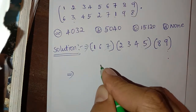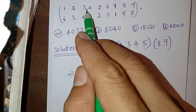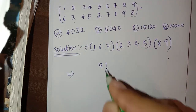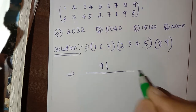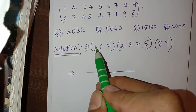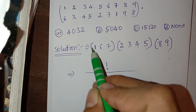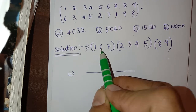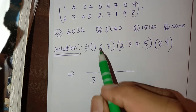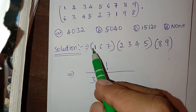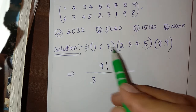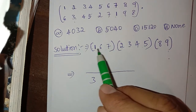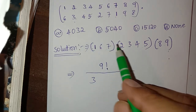We have to take nine factorial. Here one, two, three, four, five, six, seven, eight, nine — so nine factorial divided by certain values. In the first cycle there are three numbers: one, six, seven. So three. The cycle containing three elements is only one here; there is no another cycle containing three elements.